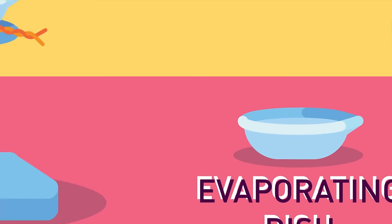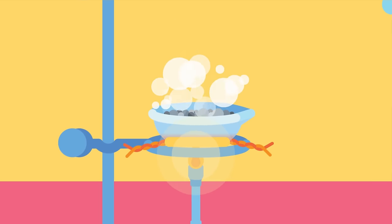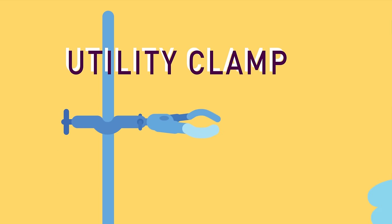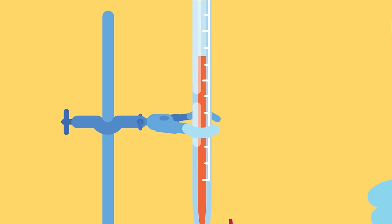Evaporating Dish. A wide ceramic dish, used to heat liquids for evaporation. Utility Clamp. A metallic clamp, used to secure glassware to a ring stand.